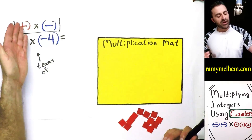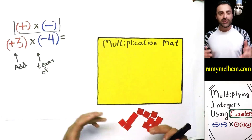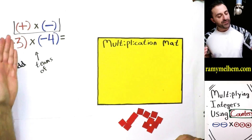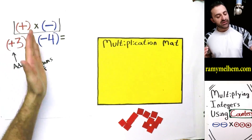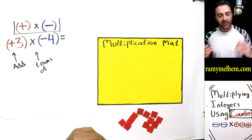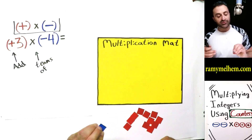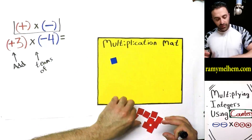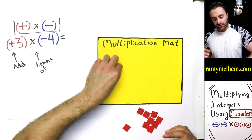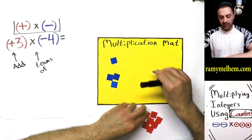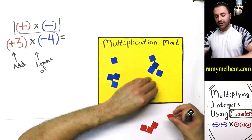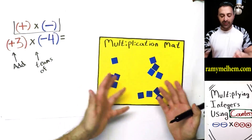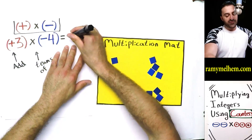Here's case number two — we're going to multiply a positive with a negative number. Reading it properly: add three teams of negative four. We know that negative four is talking about the blue players, so we need to add three teams. Here's one team, a second team, and a third team. I've added them — I've got 12 blue players, so I write negative 12.